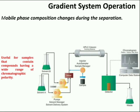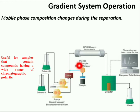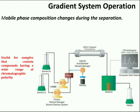The second technique is the gradient technique. In this technique, the mobile phase composition changes during the separation. As the separation proceeds, the elution strength of the mobile phase is increased to elute the more strongly retained sample components. This technique is useful for samples that contain compounds having a wide range of chromatographic polarities.